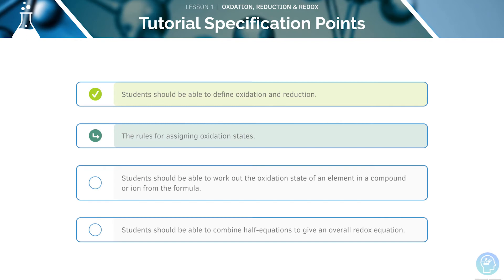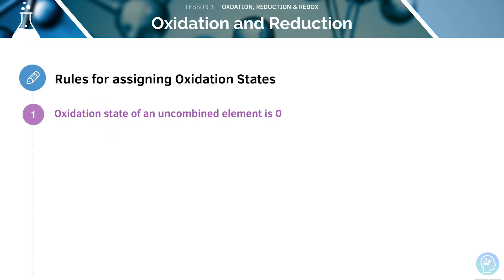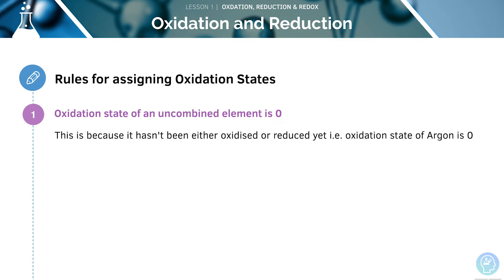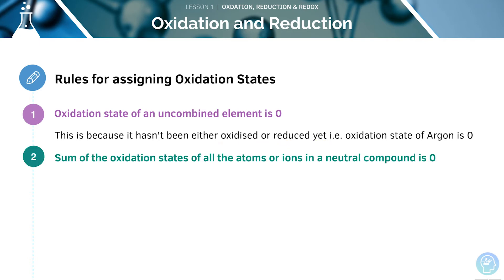Now we will look at how we assign oxidation states. You should be aware of the eight main rules for assigning oxidation states of an element in a compound or ion from the formula. First, the oxidation state of an uncombined element will be zero, because it hasn't been oxidised or reduced yet. The sum of the oxidation states of all the atoms or ions in a neutral compound will also be zero — for example, sodium chloride has an overall oxidation state of zero.